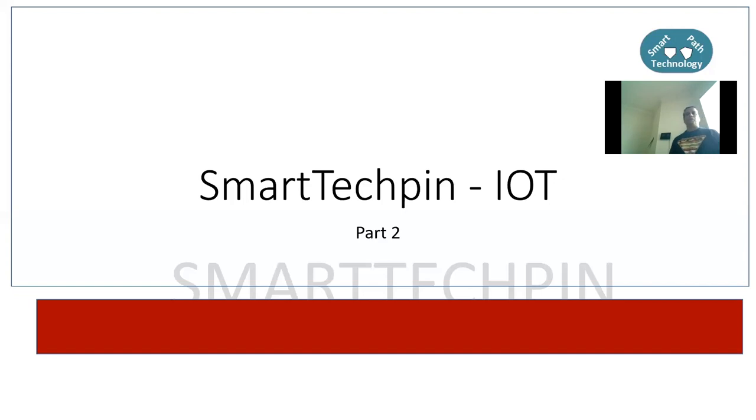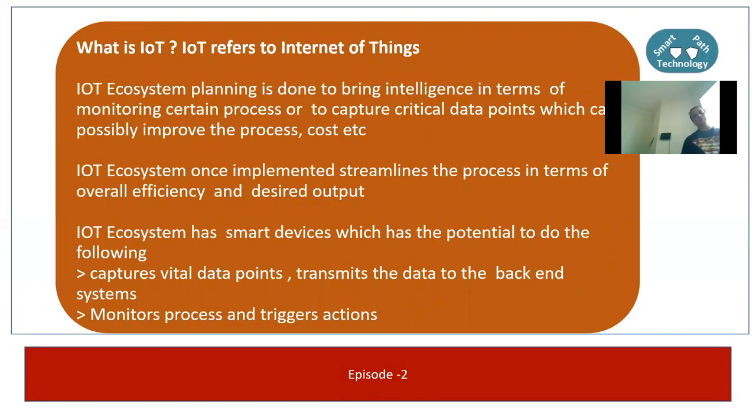This is Part 2. Just to recap, we discussed about IoT and how it can be applied in an agriculture domain. We saw the infrastructure required and what things we can monitor in an agriculture field. For those who haven't seen Part 1, please watch that video first before this Part 2.